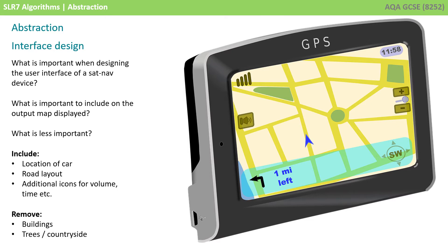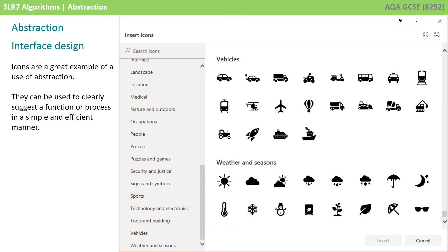You can see from the illustration that the location of the car and the road layout is important, but the trees and the buildings and the surrounding countryside are not important. To show that we're approaching a junction, we want some audio and visual clues about which direction we should be taking next, and these need to be given in plenty of time. It's important not to show all the functionality of the device on the screen at once.